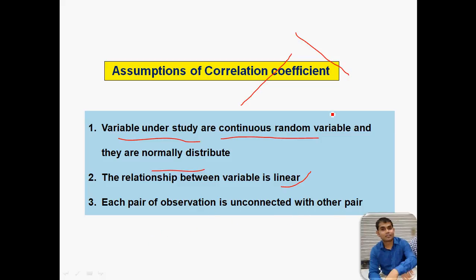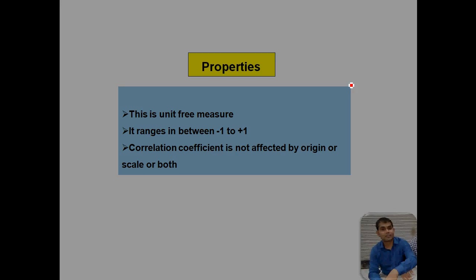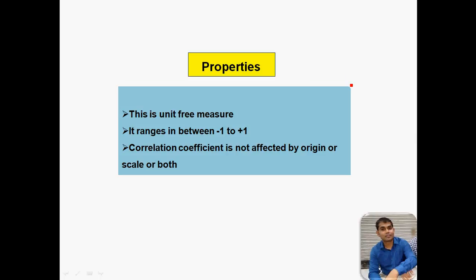Each pair of observations is independent from the other pair — suppose this is X and Y, and the other pair would be like X and Z, but each pair would be different from the other pair. Looking at the properties of the correlation coefficient: it is unit-free, meaning it does not have any unit, and that is why it lies between minus 1 to plus 1.